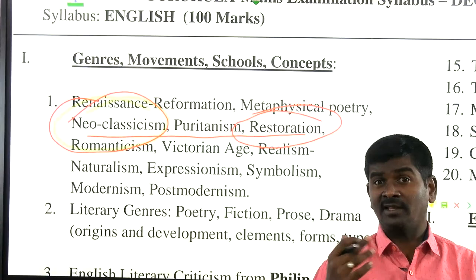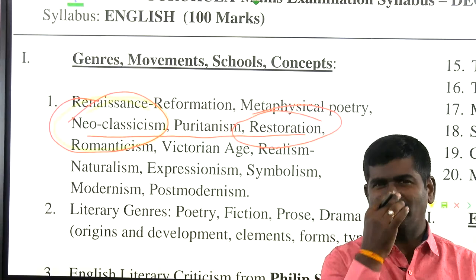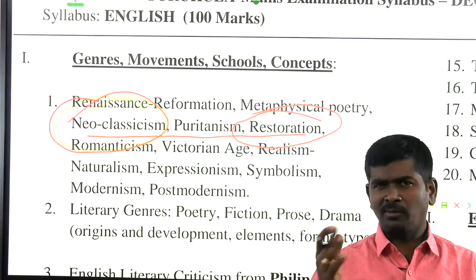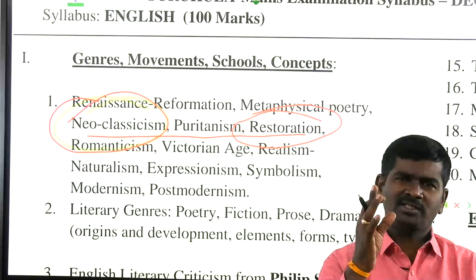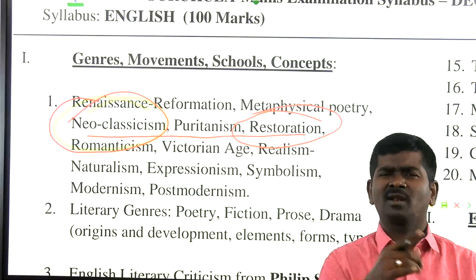Another school — the Scriblerus Club: a group of poets including Jonathan Swift, Alexander Pope, John Gay, Dr. Arbuthnot, Thomas Parnell, and Thomas Gray. What does it mean by the Scriblerus Club? How many issues did it publish? How did they get the name Scribblers? What is the connection between Martinus Scriblerus and the Scriblerus Club?